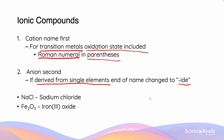However, unlike covalent compound nomenclature, it is important to note that no prefixes need to be included to denote the number of each element in the compound. That's why when we look at the example NaCl, rather than calling this monosodium monochloride, it is simply sodium chloride. Fe2O3 is iron(III) oxide, because Fe is a transition metal and the oxidation state of Fe is 3. There is no space between the ending letter of the element and the parentheses.